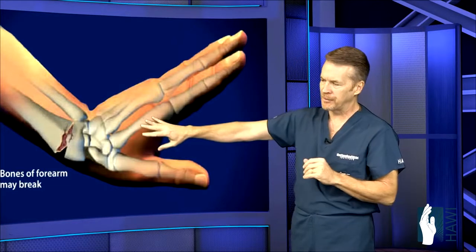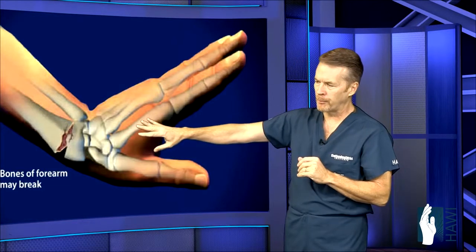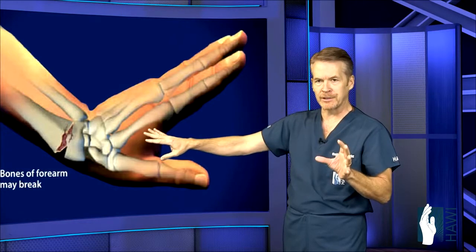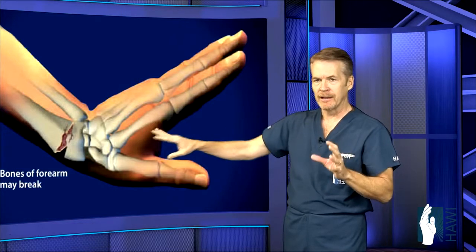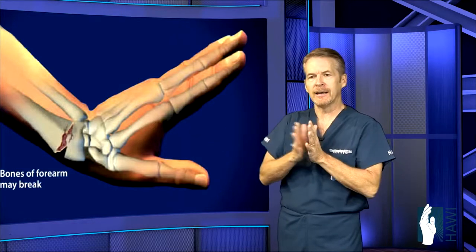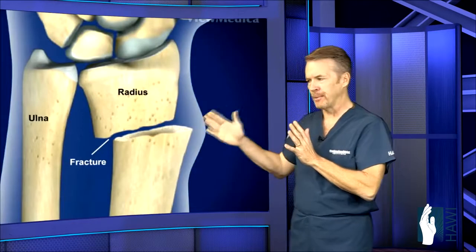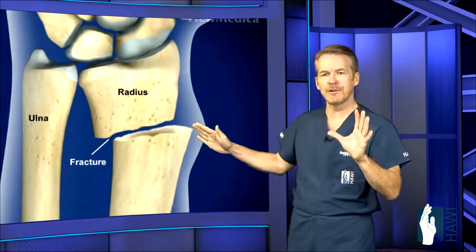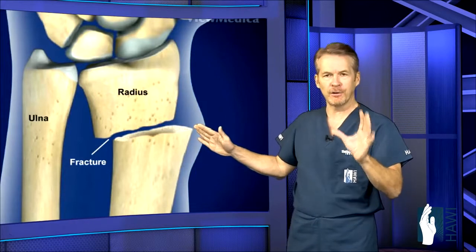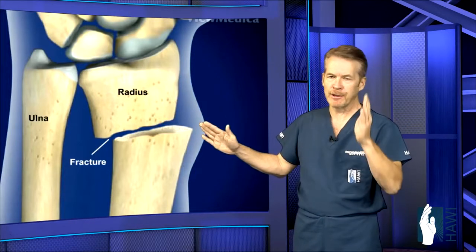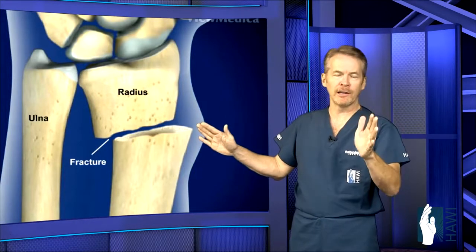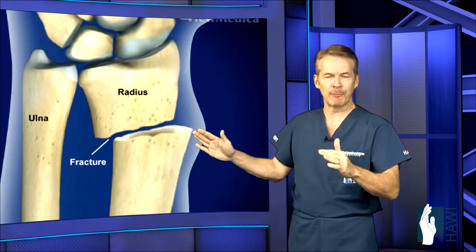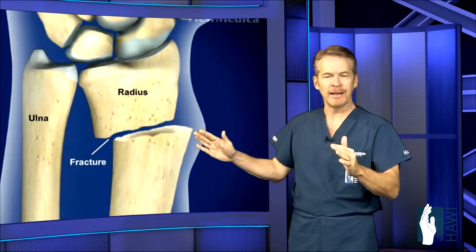The most common bone fractured is the radius, at the tip of the forearm. Now let's take a look at an actual displaced radius fracture. Fractures are usually two types: either they're normally aligned, or if they're not, you've got to get them normally aligned.